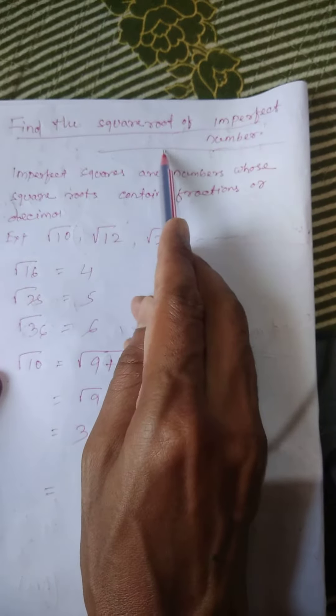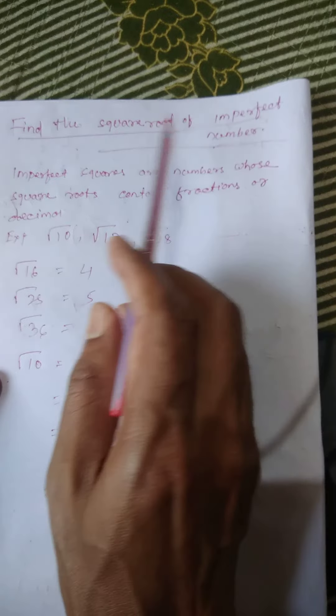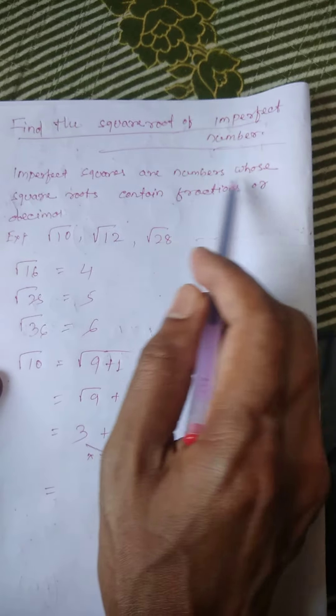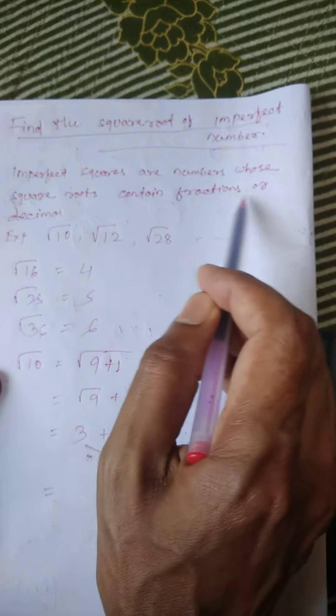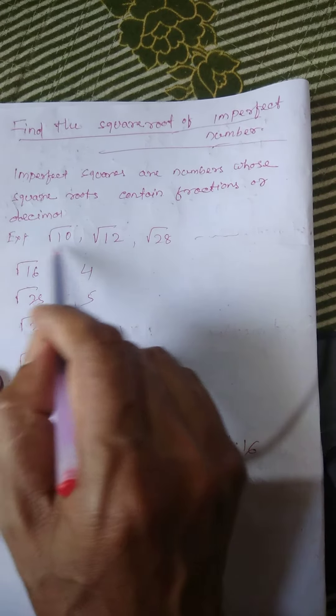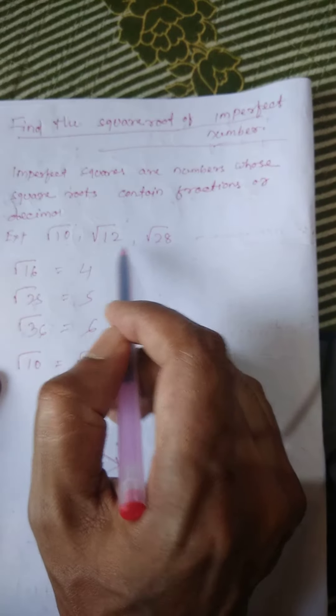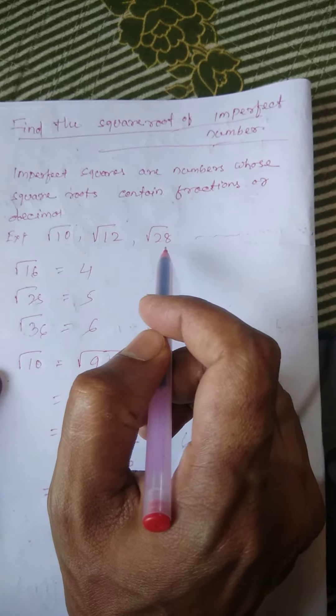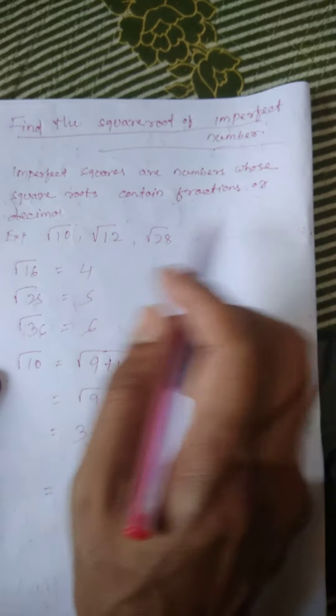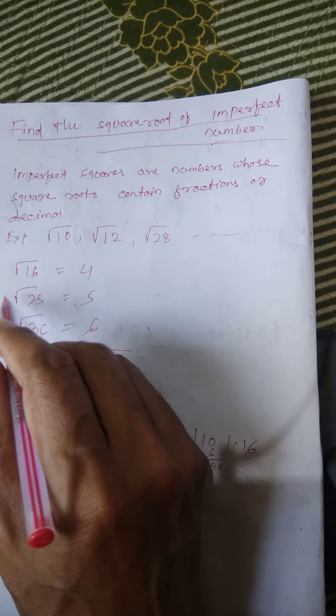Find the square root of imperfect numbers. Imperfect squares are numbers whose square root contains fractions or decimals. For example, root 10, root 12, root 8, root 28, and so on.